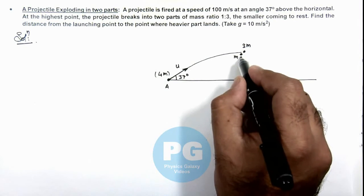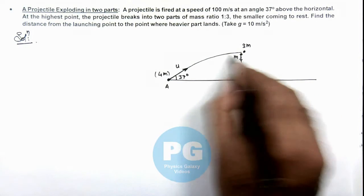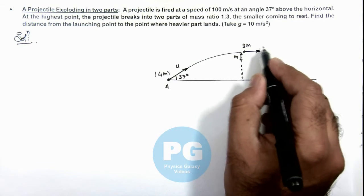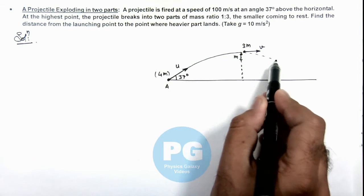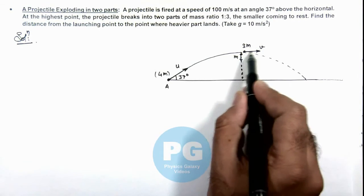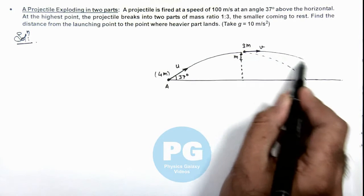So m comes to rest and falls down here only, and 3m which carries the whole momentum of this projectile carries on its motion with a speed v. And if it does not break it follows a parabolic trajectory like this, but due to this explosion the speed of this 3m will increase and finally it will land somewhere here.